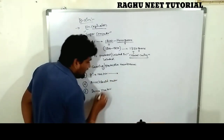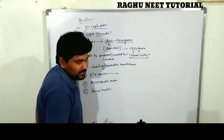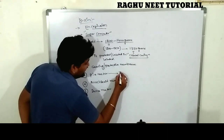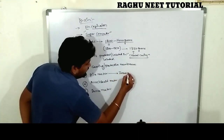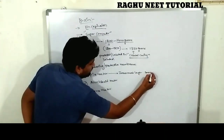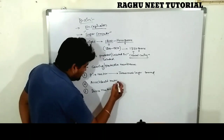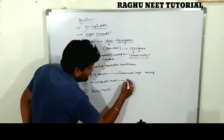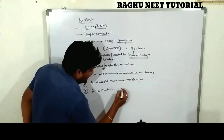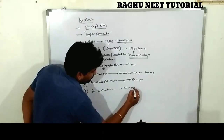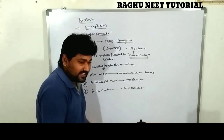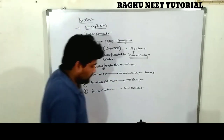The pia mater is the innermost layer, covering the brain directly. The arachnoid mater is the middle layer, and the dura mater is the outermost layer. Let's see the diagrammatical view of these layers.